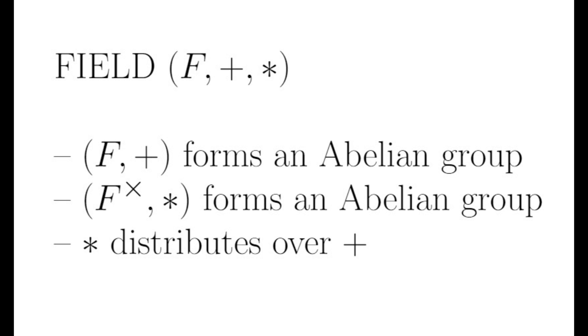A field is a mathematical object consisting of a set F and two binary field operations, plus and star, such that F forms an abelian additive group, and F minus the additive identity forms an abelian multiplicative group, and multiplication distributes over addition.